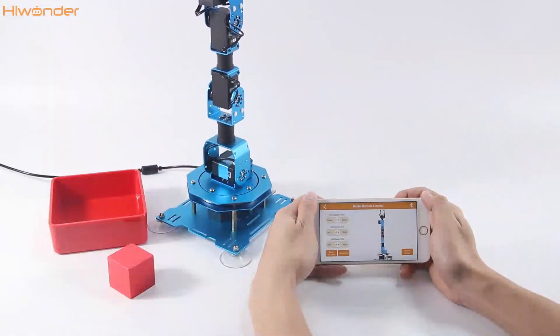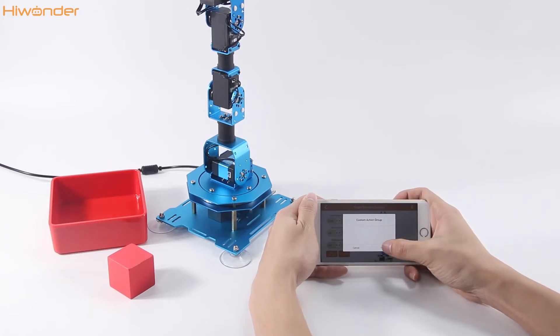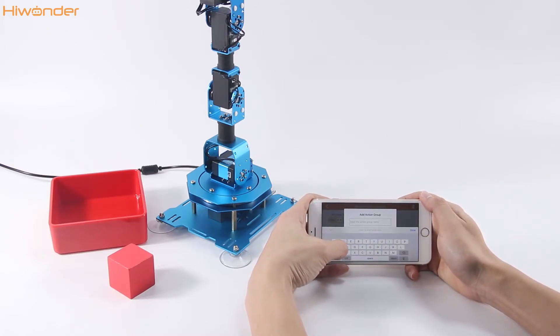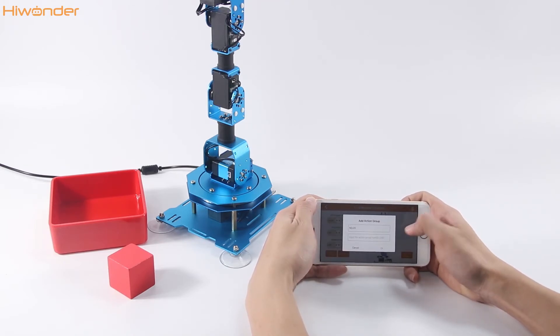Let's go back to the model remote control. Click here. Input the action name as you like, such as number 20 or pick up or anything else. But please pay attention to the number. The number should be same as the one we set at the PC software. So it is 20.